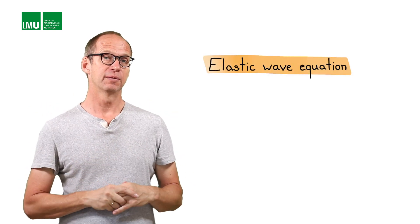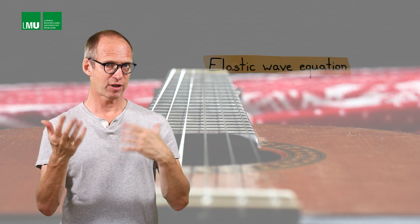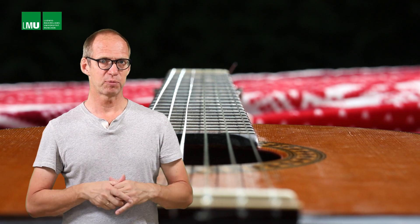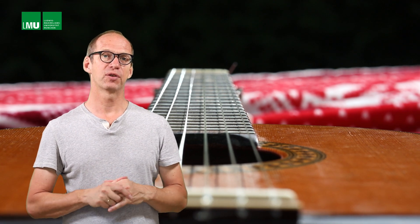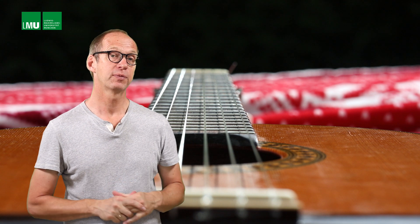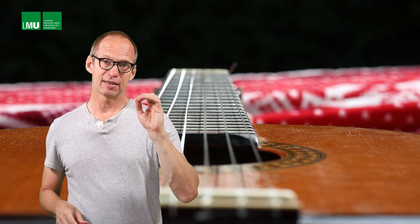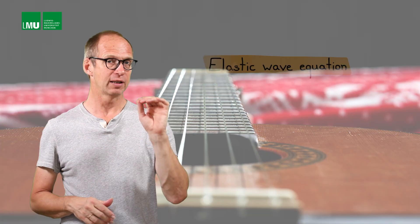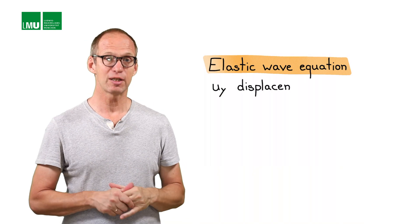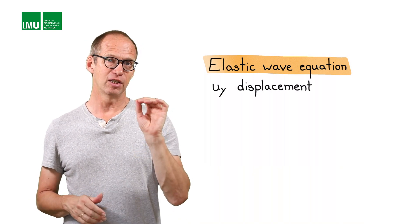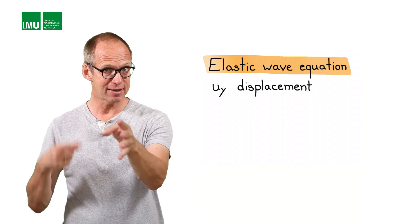We'll also make use of a slightly different form of the wave equation. This is for elastic waves. You see here some strings vibrating. It's basically a description of waves on a guitar string, for example. And that's described with the letter U, which is a displacement. In this case, in the y direction, if you propagate in x, let's say this is x, then you have a particle motion perpendicular to the propagation direction.